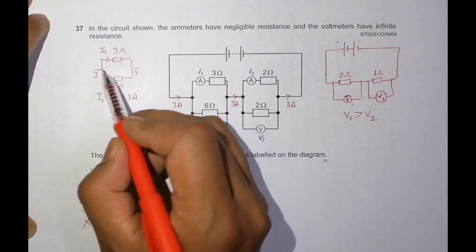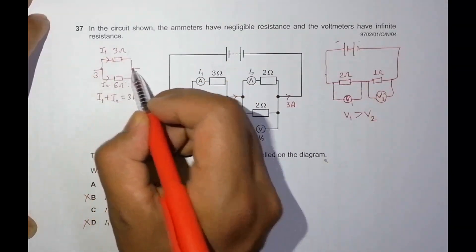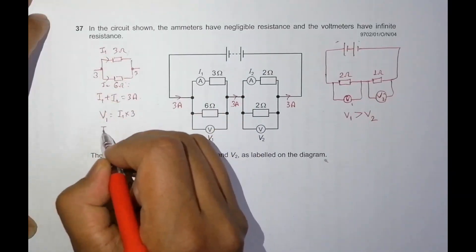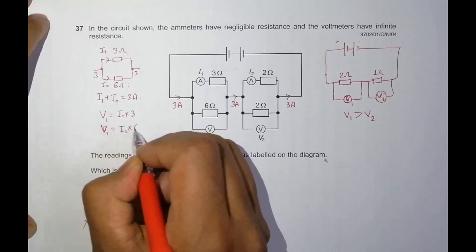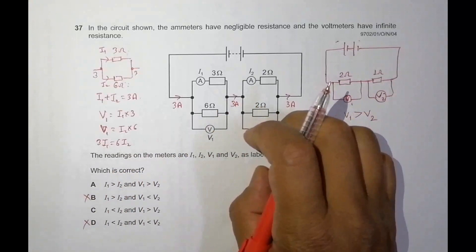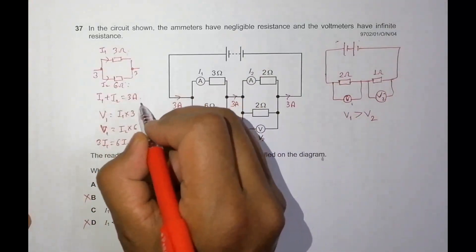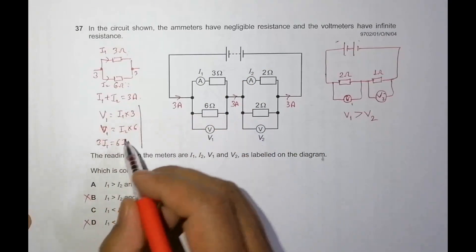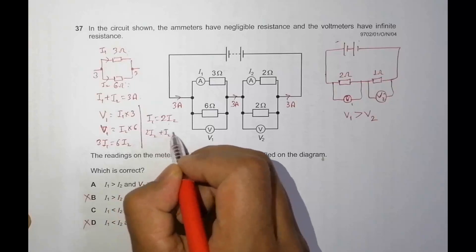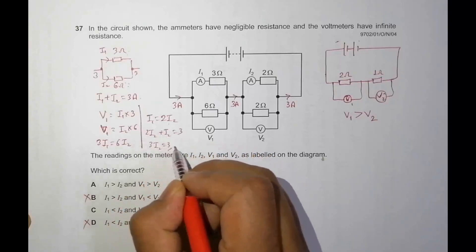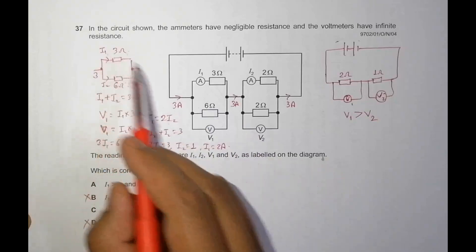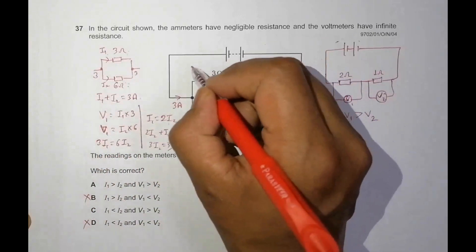Since the potential difference across both branches must be the same, V1 equals I1 times 3, and V1 equals I2 times 6. This gives us 3·I1 equals 6·I2, so I1 equals 2·I2. Substituting: 2·I2 plus I2 equals 3, giving I2 equals 1 ampere and I1 equals 2 amperes.